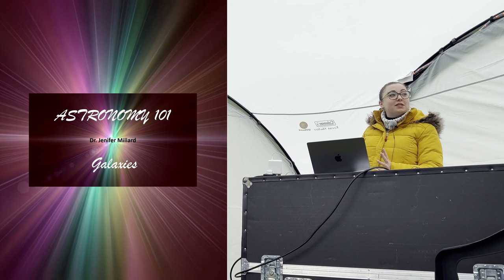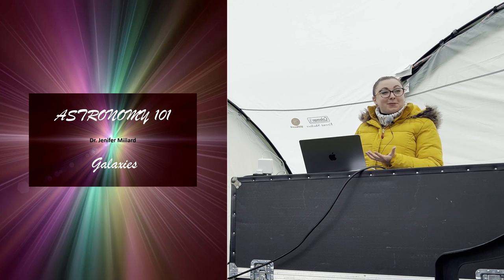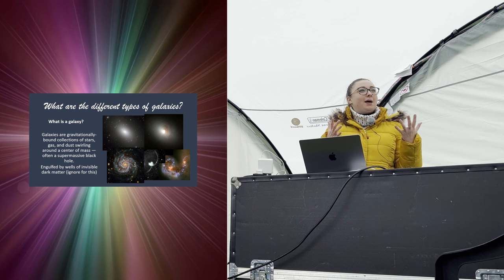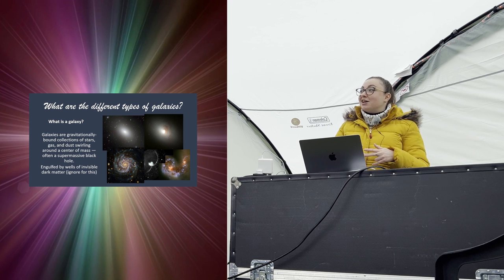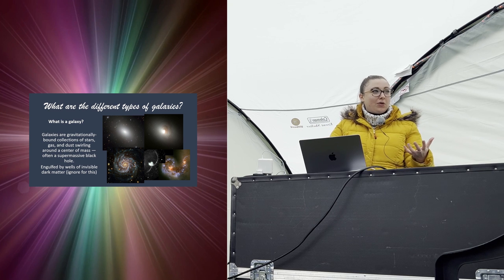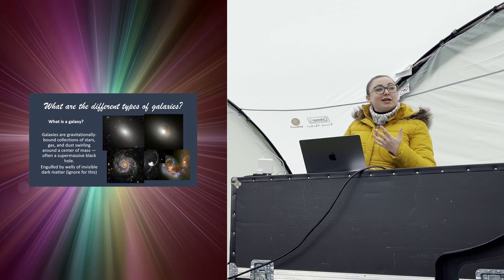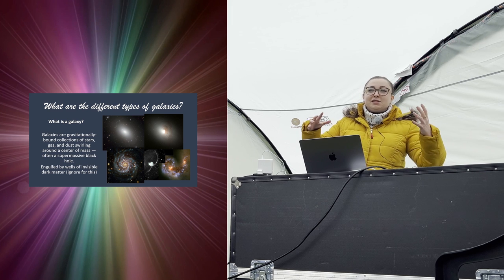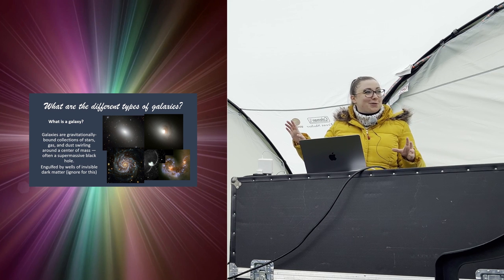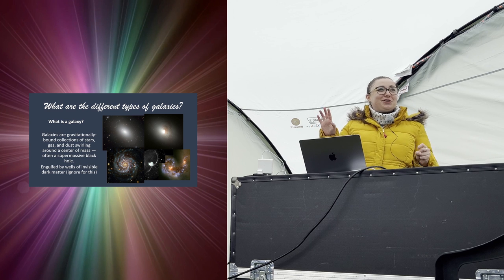Next, I'll cover the different types of galaxies. So what is a galaxy? Galaxies are these enormous gravitationally bound collections of stars, gas, dust, and planets — they all swirl around a central supermassive black hole. Depending on the type of galaxy, sometimes that swirling is nice and ordered, other times it's quite chaotic. All of these stars, gas, and dust sit in an enormous well of dark matter, but we won't talk about dark matter — this is astronomy 101, not 105.